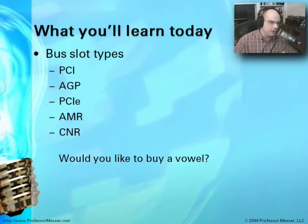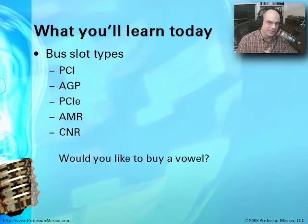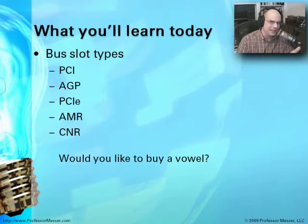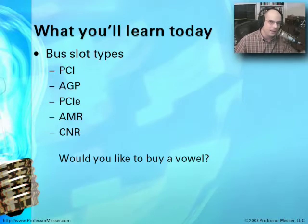We're going to learn about these different bus slot types: PCI, AGP, PCIE, AMR, and CNR. There are a lot of letters here that we aren't quite certain what those are — that's exactly how they're written in the CompTIA certification information. We need to find out what those mean and what they're about.